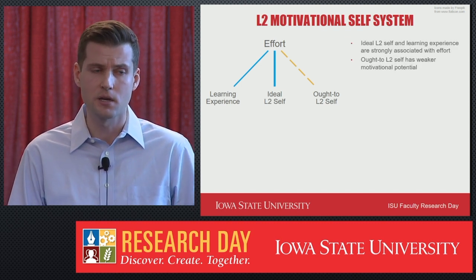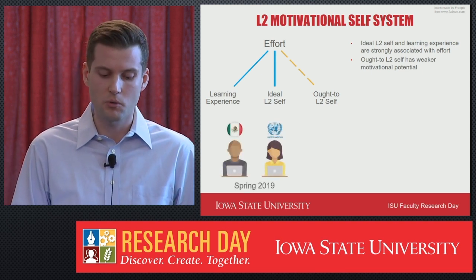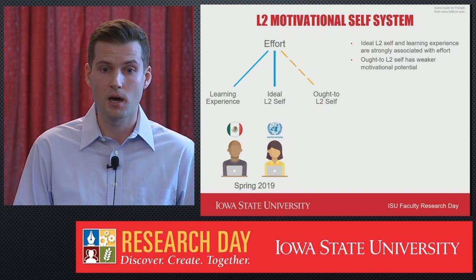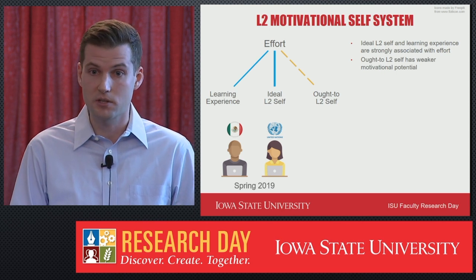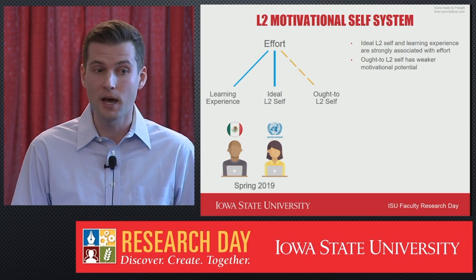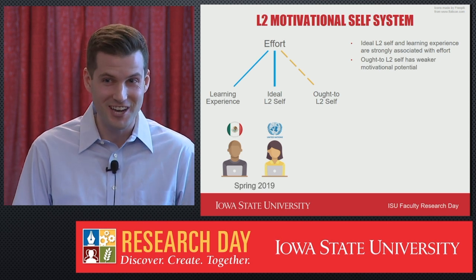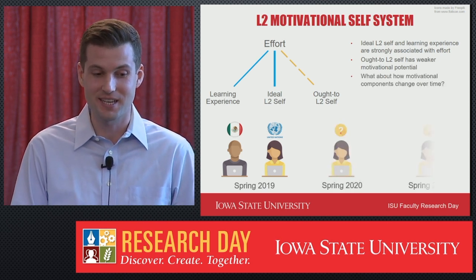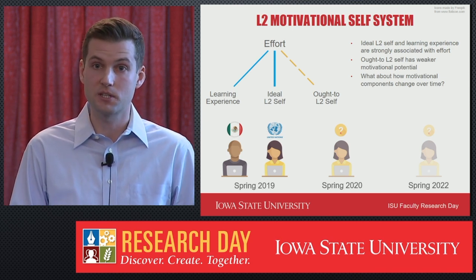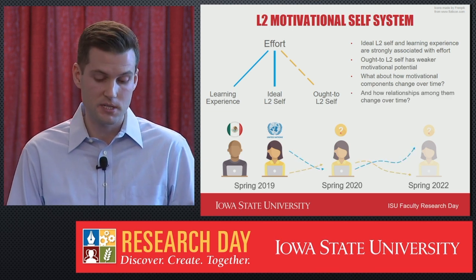If we put this model into practice, we can imagine two individuals learning a language. One perhaps wants to study abroad and live in Mexico, and the other envisions herself working as an interpreter at the United Nations, and those two goals would serve to orient their effort and guide their motivated behaviors. However, research in this area has predominantly compared learners to one another, which is not my interest. My interest is in comparing learners to themselves over time and asking how does each motivational dimension change over time, and how do relationships between the different motivational dimensions change over time?